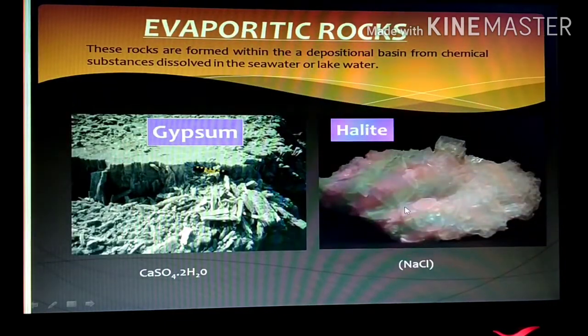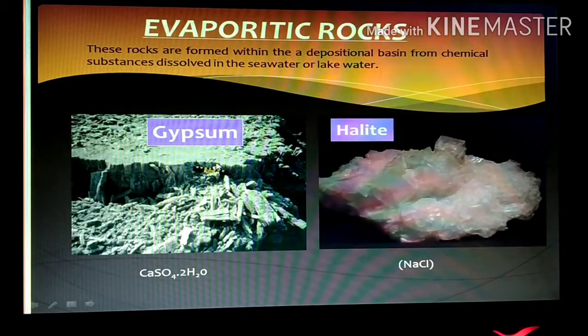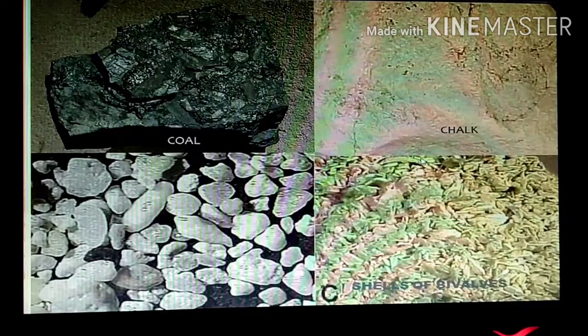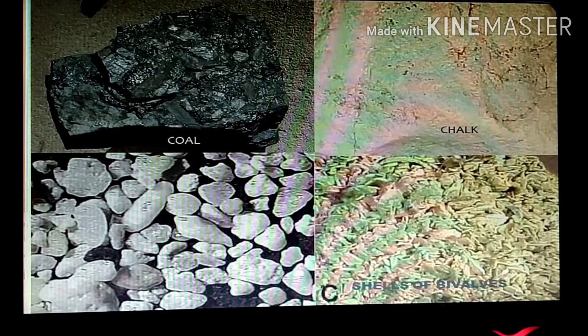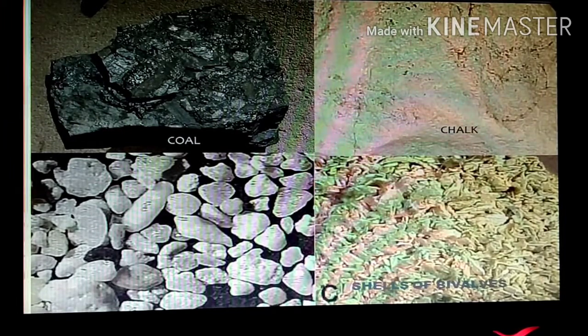Here we have evaporate rock. This is a gypsum rock. And this is a halite. Then here you can see coal. This is chalk. These are the deposits of some microorganisms and shells. And here are the bivalvian shells.